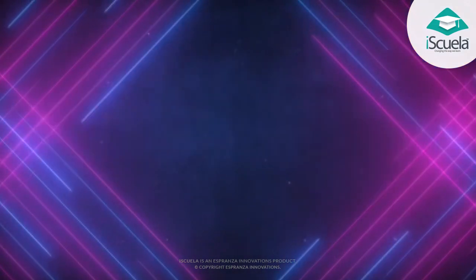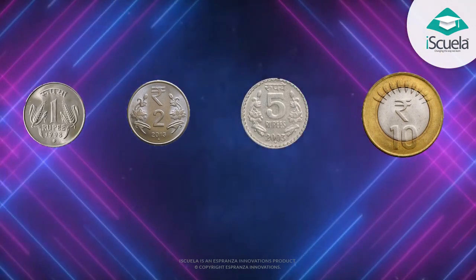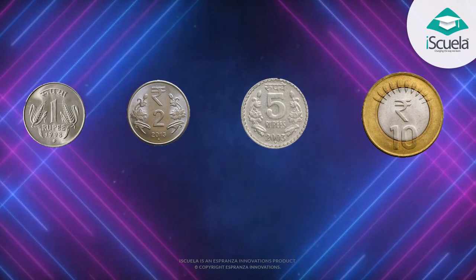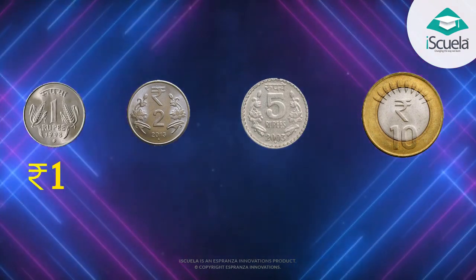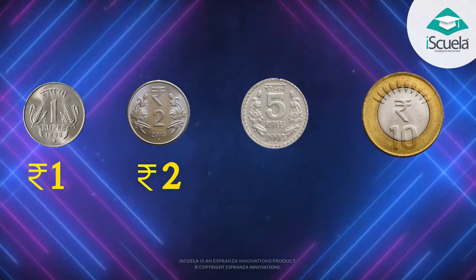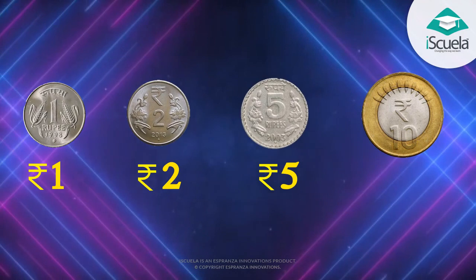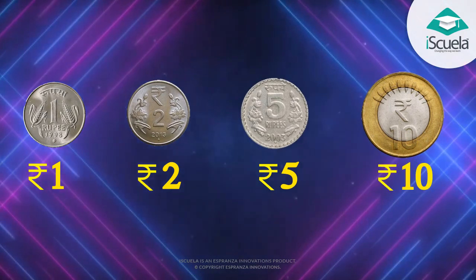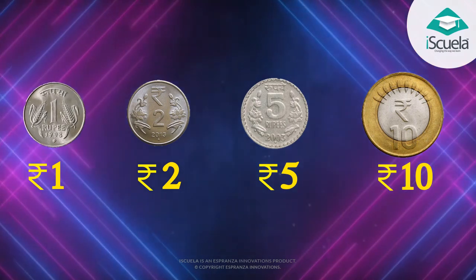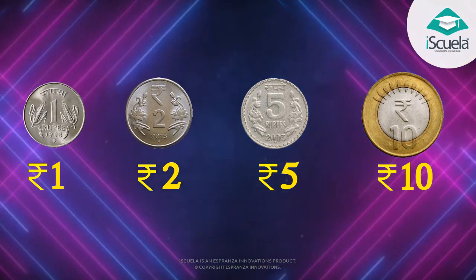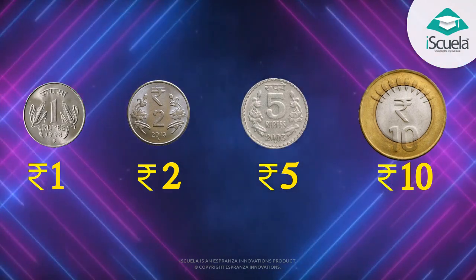Now, look at the coins and tell their value. It's a one rupee coin. It's a two rupee coin. It's a five rupee coin. It's a ten rupee coin. One rupee, two rupee, five rupee, ten rupee.